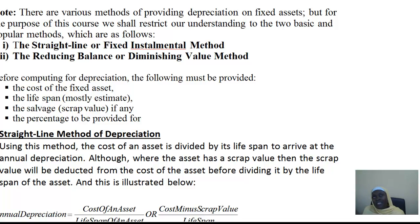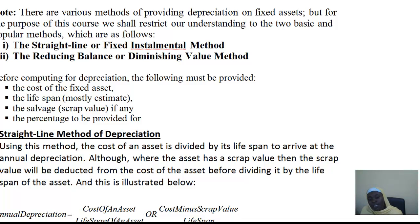For the purpose of this, even though we have different methods of providing for depreciation, we will be restricted to the two basic methods: the straight line method, also called the fixed installment method, and the reducing balance or diminishing value method. These are the two basic methods we will be looking at.